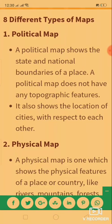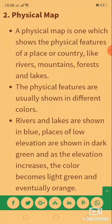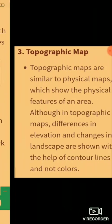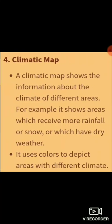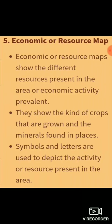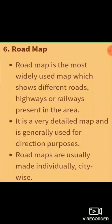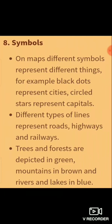There are eight different types of maps: the political map, the physical map, the topographic map, the climatic map, the economic or resource map, the road map, the scale of a map, and the symbols.